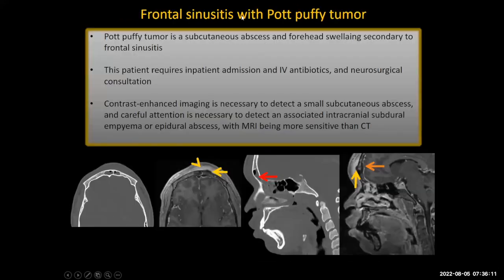This is frontal sinusitis with Pott's puffy tumor — the eponym. The Pott's puffy tumor is a subcutaneous abscess and forehead swelling secondary to frontal sinusitis. This patient requires inpatient admission, IV antibiotics, and a neurosurgical consultation. Neurosurgery didn't drain it — it's such a small abscess that it's not indicated. However, when you have any sort of infection extending into the intracranial compartment, you should definitely get them on board. Contrast-enhanced imaging is necessary to detect small subcutaneous and intracranial abscesses. MRI is more sensitive than CT, especially for detection of small abscesses.